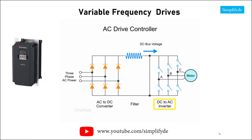At the inverter, an array of fast-acting switches convert the DC bus voltage into pulses at a constant magnitude that are proportional to the DC bus voltage. In a typical three-phase frequency inverter, there are six switches, with a pair of switches for each phase.